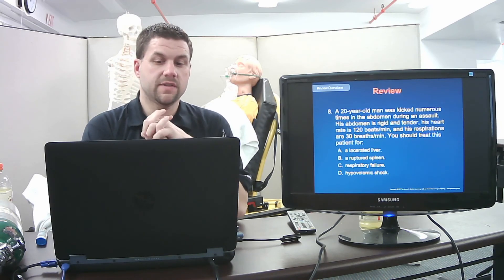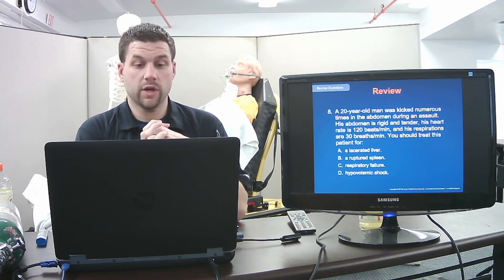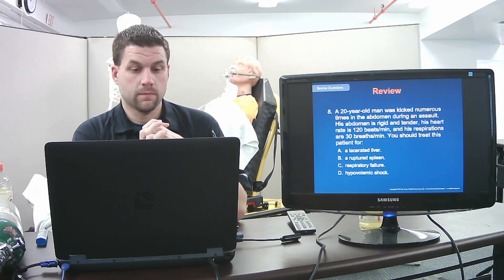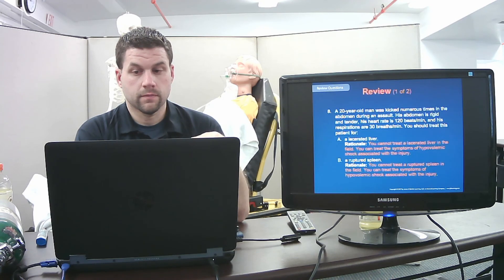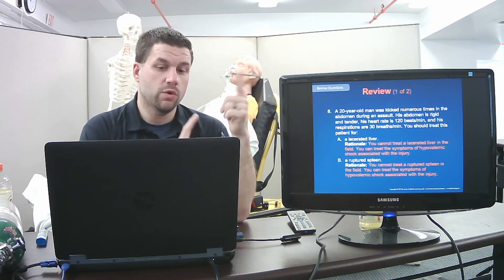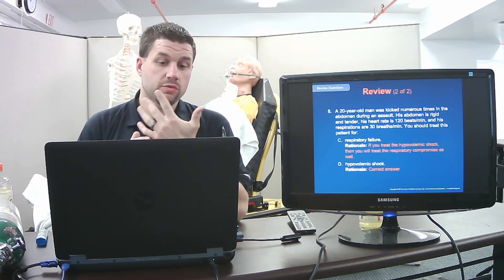A 20-year-old man was kicked repeatedly in the abdomen — his abdomen is rigid and tender, heart rate 120, respiratory rate 30. You should treat him for — answer D — hypovolemic shock. He may have a liver laceration or ruptured spleen causing internal blood loss. More importantly, recognize that he is in hypovolemic shock and treat accordingly. Treating hypovolemic shock will also address the associated respiratory compromise.